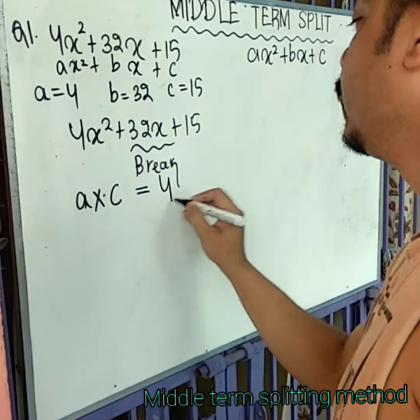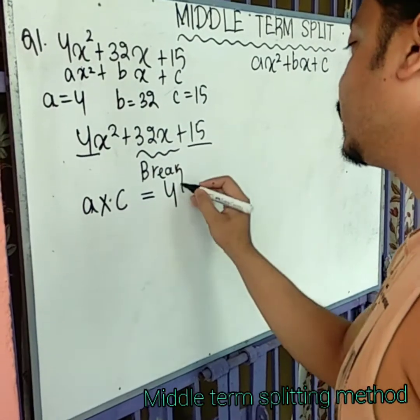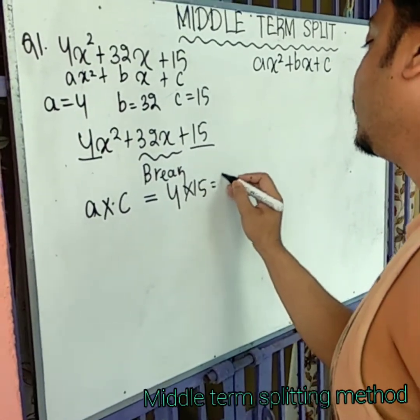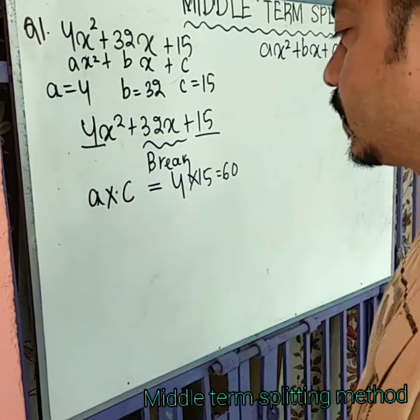A value is 4 or c value is 15. So, 15 times 4 is 60.